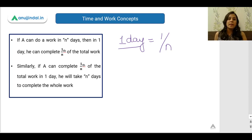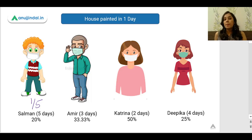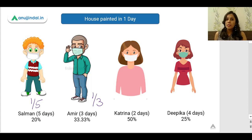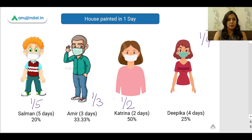If he takes 10 days, he completes 1/10 of the work per day. Conversely, if he completes 1/20 of the work per day, he takes 20 days. Applying this: Salman (5 days) paints 1/5 = 20% per day; Amir (3 days) paints 1/3 ≈ 33% per day; Katrina (2 days) paints 1/2 = 50% per day; Dipika (4 days) paints 1/4 = 25% per day.